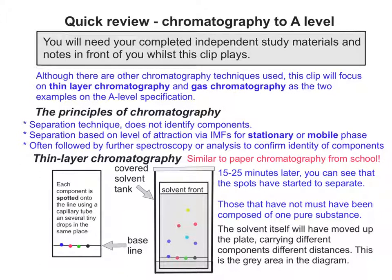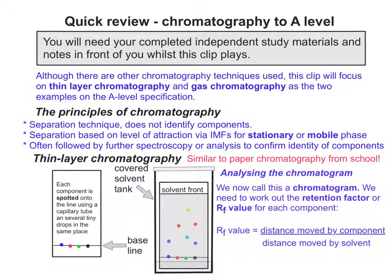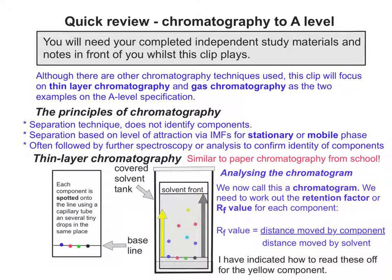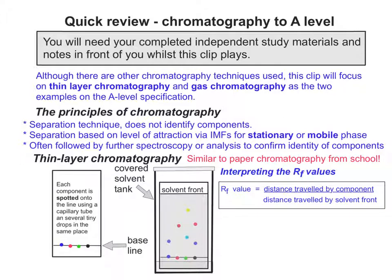The solvent itself will have moved up the plate, carrying the different components at different distances — I've indicated this by the grey area on the diagram. We can now use these different distances to work out the degree of separation. To analyse our chromatogram, we work out the RF value for each component. The distance moved by the component is divided by the distance moved by the solvent. I've added two arrows to the chromatogram: the yellow arrow is the distance moved by the yellow component, and the grey arrow is the distance moved by the solvent. The very edge of where the solvent has travelled to is called the solvent front, as labelled on the diagram.